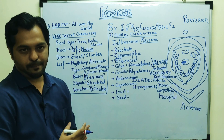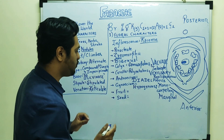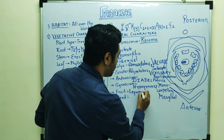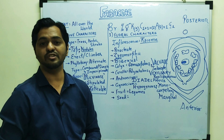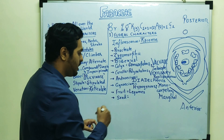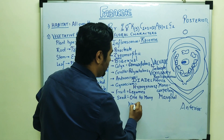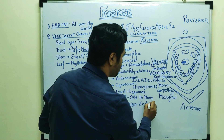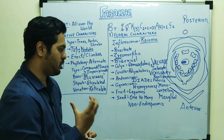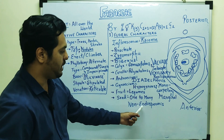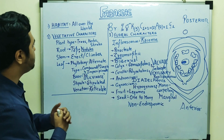The fruit is a legume, which is a type of dry and dehiscent fruit. Seeds can be one to many. The seeds are non-endospermic — endosperm is absent — meaning they will have fleshy and thick cotyledons as the main nutritious part.